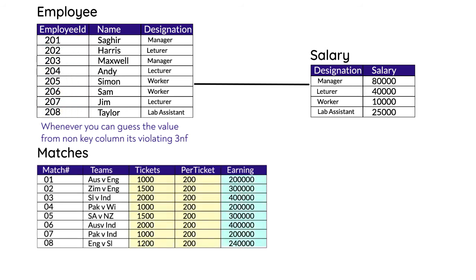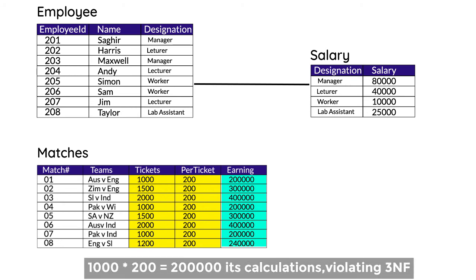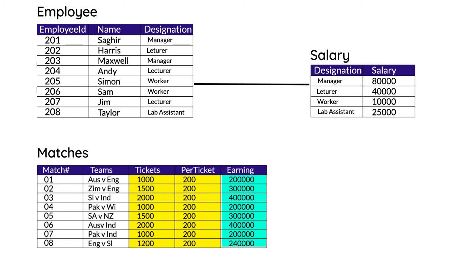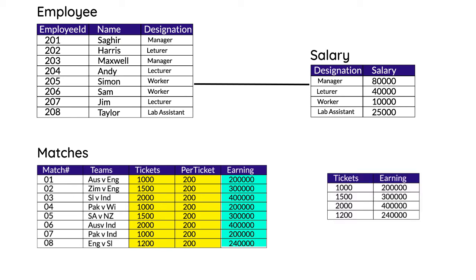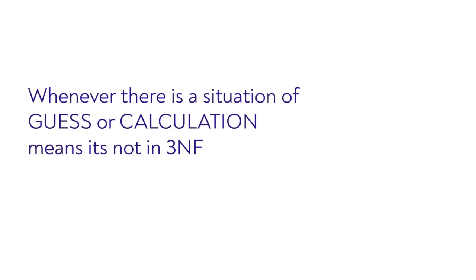Transitive dependency also occurs when there is a calculation performed in the table. For example, the amount of earning is dependent on total ticket sales multiplied by the price of the ticket — this is also a transitive dependency. If there are 1,000 tickets sold and each ticket is 200, then the earning is 200,000. So if any calculation can be performed on a table column, it is also considered a transitive dependency and violates Third Normal Form.